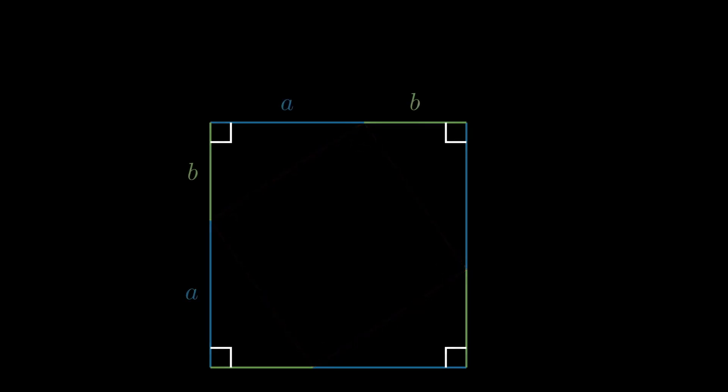The area of the blue and green square can be given by its side lengths, so the side lengths are a plus b, so the area is a plus b squared, which is equal to a squared plus 2ab plus b squared.